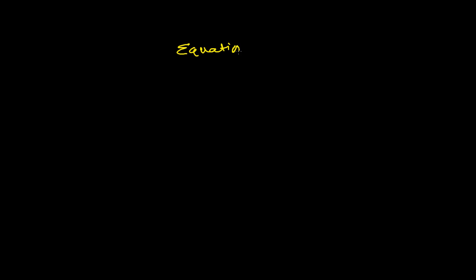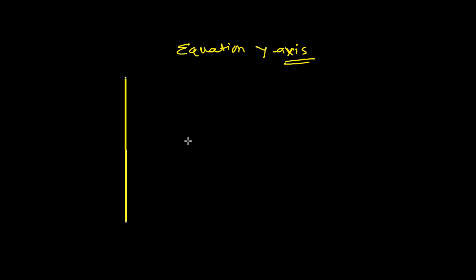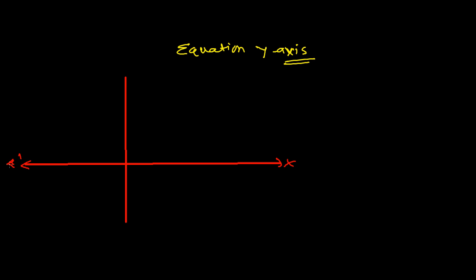In the previous video we learned the equation of the x-axis. Now let's learn the equation of the y-axis. Let's suppose we have the axes — this is our y-axis, this is our x-axis. This is our positive x-axis, this is our negative x-axis, this is our positive y-axis, this is our negative y-axis, and this is our origin.